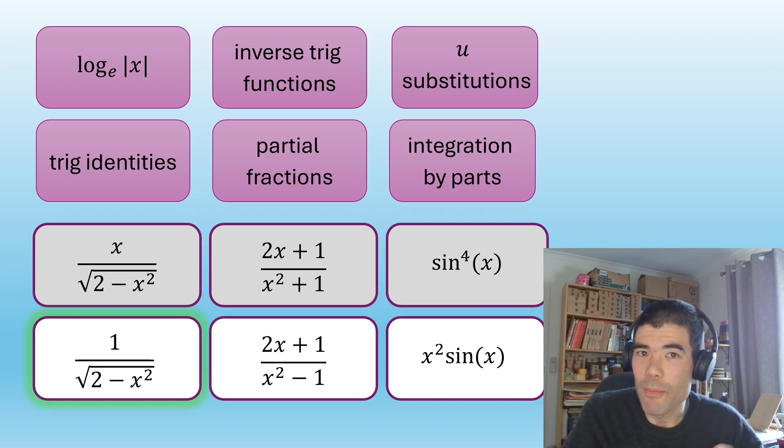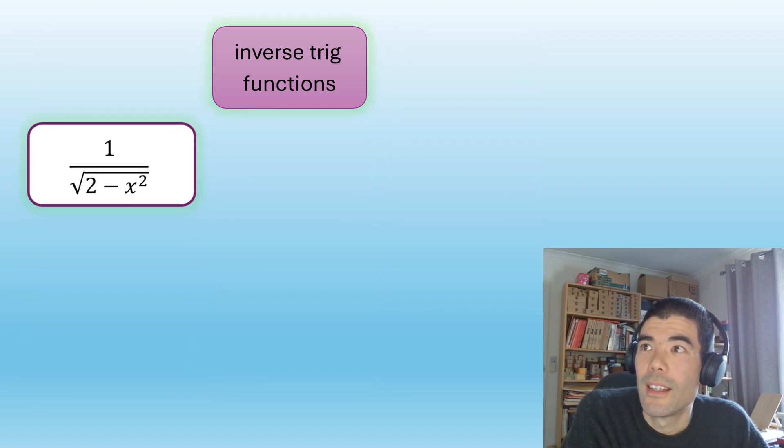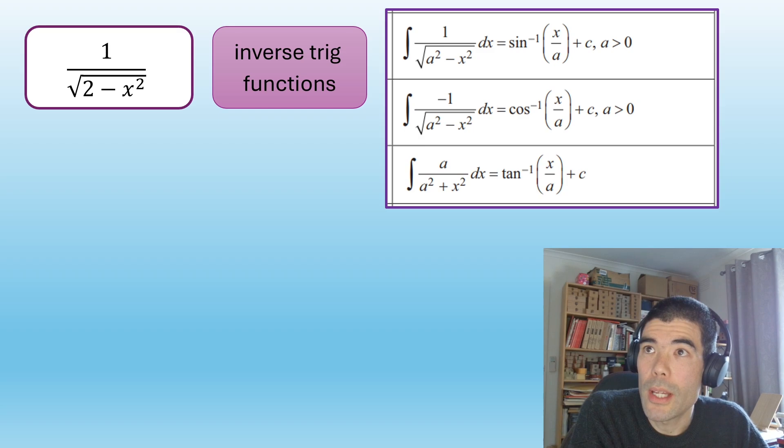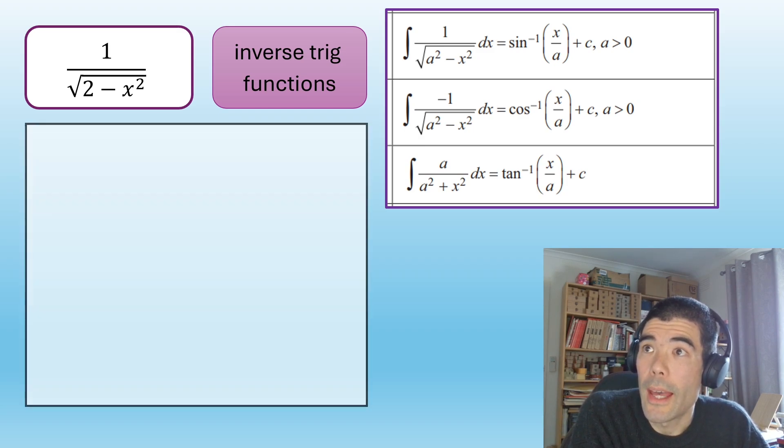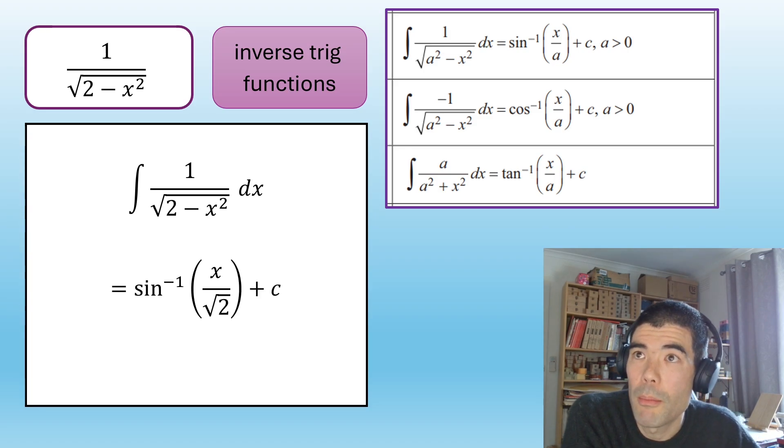All right. So we're up to this one. Can you recognize what it is? Hope you got it. It's an inverse trig function. If we look at our formula sheet again, this one is a straight application of the inverse sine where a squared is 2. So we're going to get inverse sine of x over the square root of 2 plus c.